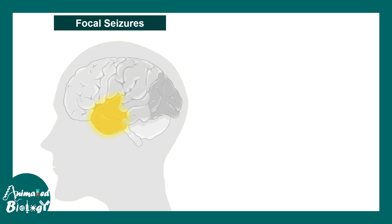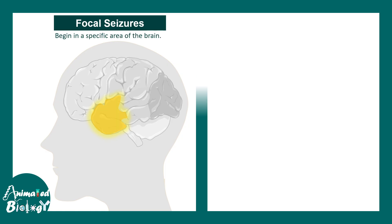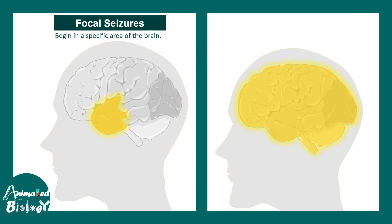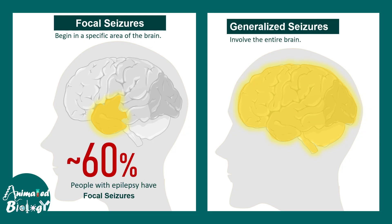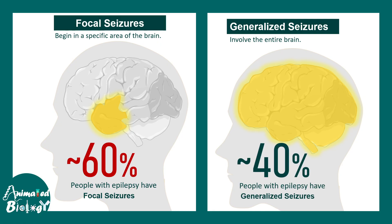There could be focal seizures, meaning the electrical imbalance is happening in only one portion of the brain, or there could be generalized seizures which involve the entire brain. Focal seizures are the most common, but generalized seizures are also not uncommon.